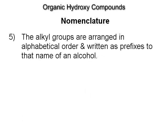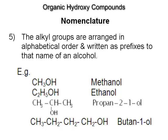Alkyl groups are arranged in alphabetical order and written as prefixes to the name of the alcohol. For example: CH3OH is methanol, C2H5OH is ethanol, CH3CH(OH)CH3 is propane-2-ol, and CH3CH2CH2CH2OH is butane-1-ol.